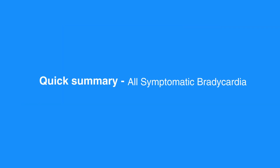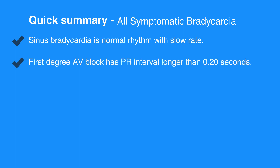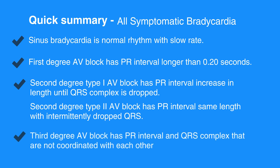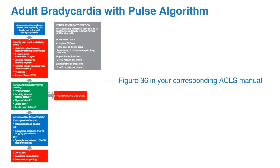Here is a quick summary of all the symptomatic bradycardias. Sinus bradycardia is normal rhythm with a slow rate. First degree AV block has a PR interval longer than 0.2 seconds. Second degree type 1 AV block has a PR interval that increases in length until a QRS complex is dropped. Second degree type 2 AV block has a PR interval of the same length with intermittently dropped QRS complexes. Third degree AV block has a PR interval and QRS complex that are not coordinated with each other. For the adult bradycardia with pulse algorithm, refer to figure 36 in your corresponding ACLS manual.